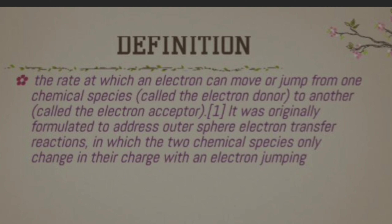Definition of Marcus Theory: Marcus Theory defines the rate at which an electron can move or jump from one chemical species to another. The electron is transferred from an electron donor to an electron acceptor. So, when an electron moves or jumps from one chemical species to another, we use Marcus Theory to study and quantify this process.